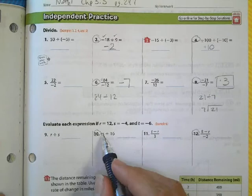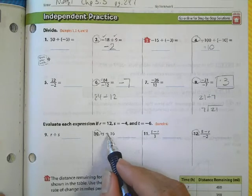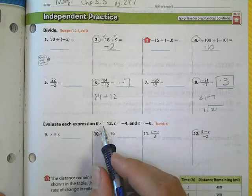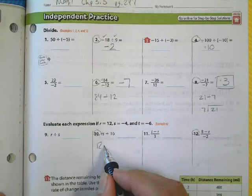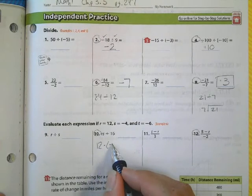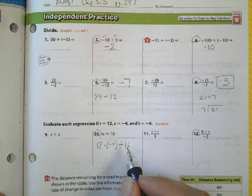On number 10, I'm going to plug numbers in. I have R times S divided by 16. R is 12, S is negative 4, and I'm going to divide that by 16.